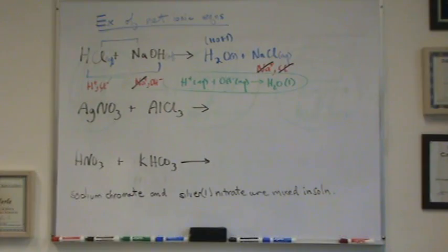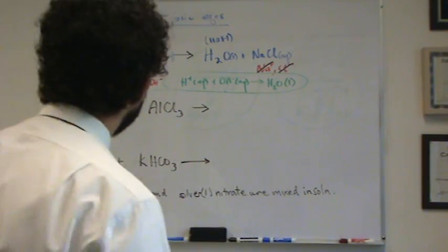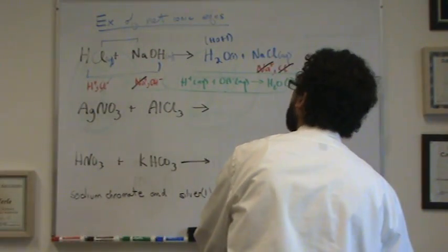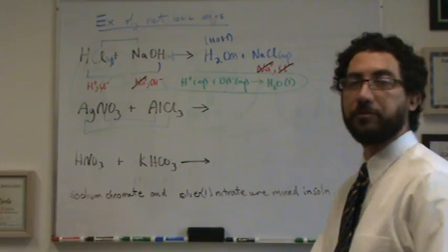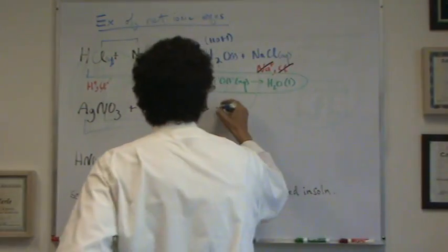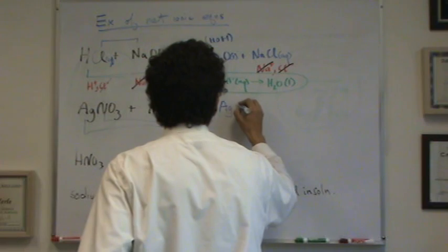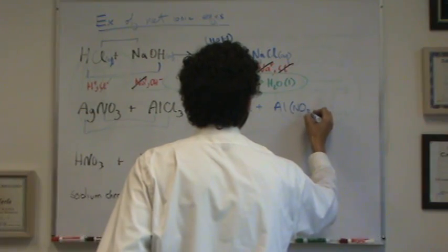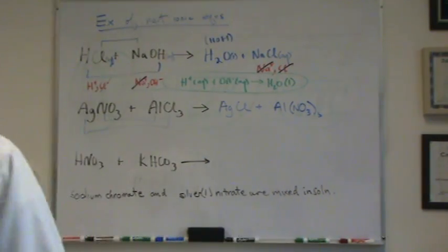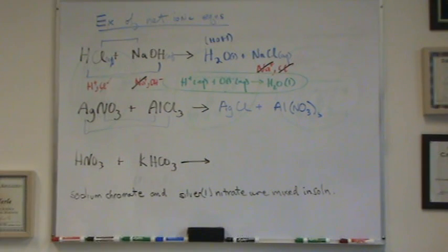Let's take a look at the second case. Step one, write the reaction. This is a double replacement. So we're going to write it out as Ag going with the Cl and NO3 going with the aluminum. So we've got silver chloride plus aluminum nitrate. Now you might wonder, why is there 3 nitrates on the aluminum? That's because the nitrate has a minus 1 charge and aluminum is plus 3. So you need 3 nitrates to balance out the plus 3 from the aluminum.